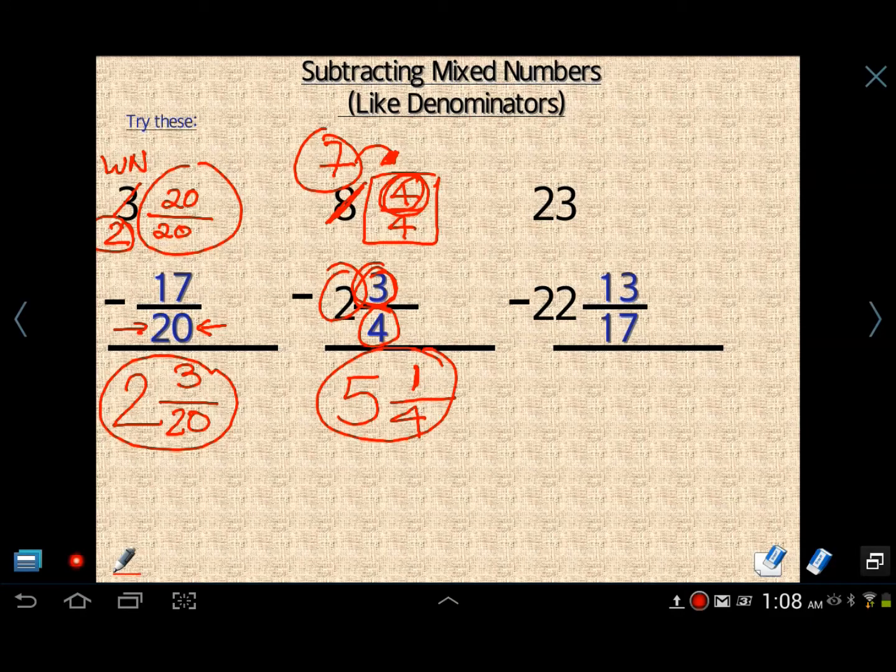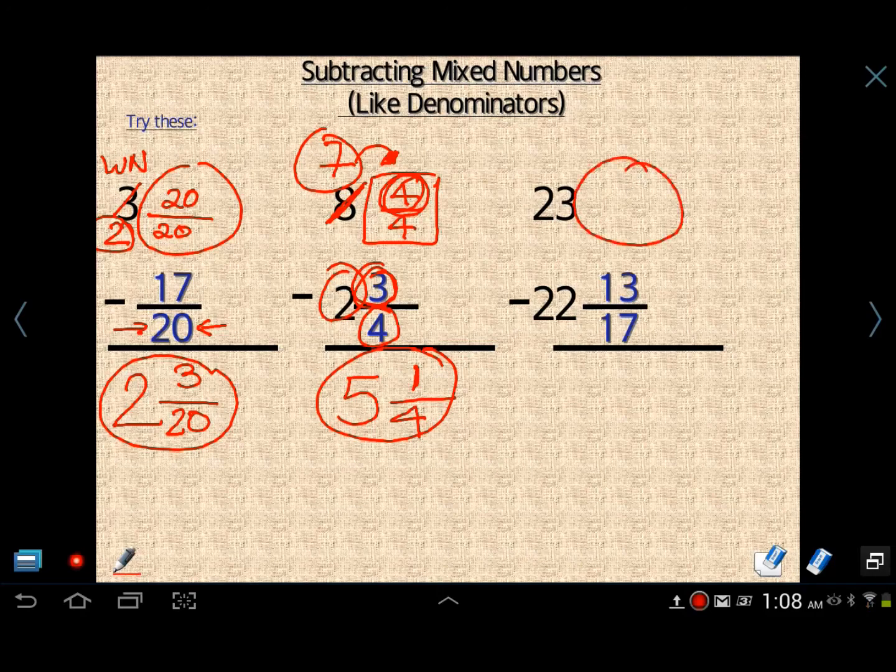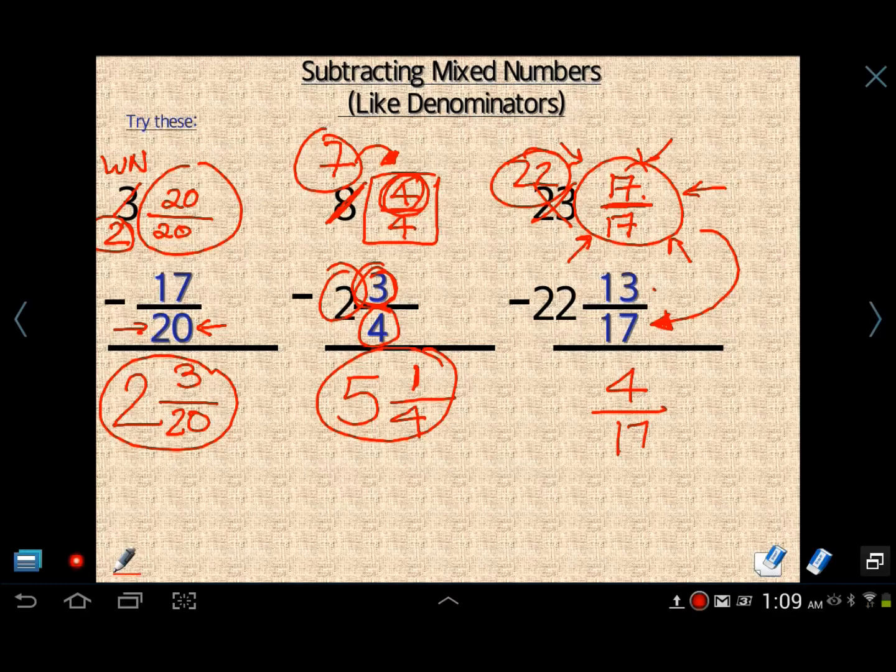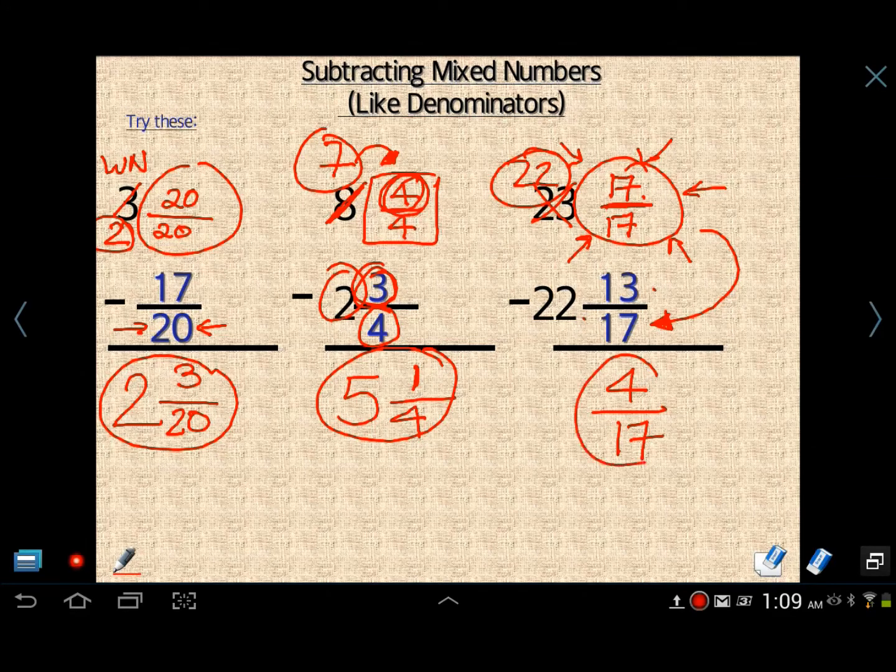Next example right here, we have 23 and nothing. We have 23 and nothing minus 22 and 13 17ths. We need something there. We definitely need something there. We can't just drop down the 13 17ths. It doesn't work that way. So let's borrow one whole from 23 and make it 22. Now what fraction are we going to put next to it? We're going to put 17 17ths. And 17 17ths was the preferred one to use because the other fraction was 17ths. So now all the math is there ready for you guys to figure out. 17 minus 13 is 4. Don't subtract or add denominators. And 22 minus 22 is just nothing. I don't need to put anything. So I'm just going to put 4 17ths.